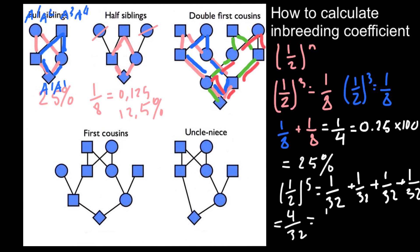Because we have four pathways, we use the addition rule: 1/32 + 1/32 + 1/32 + 1/32 = 4/32, which simplifies to 1/8. This is the same number as in the half-siblings example. The inbreeding coefficient is 12.5%.